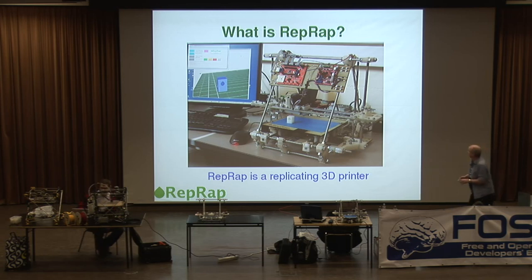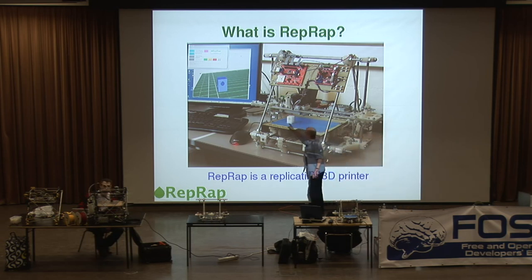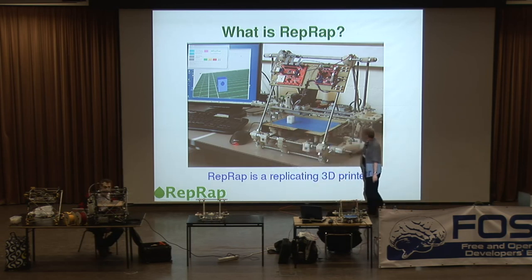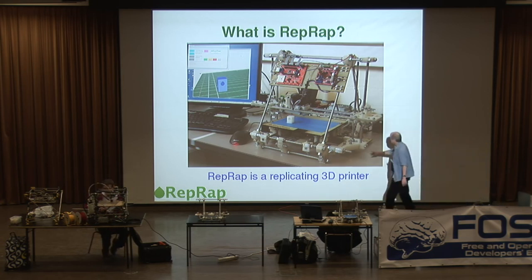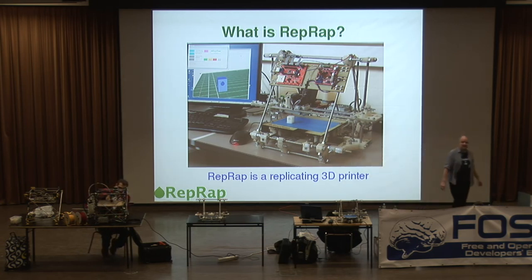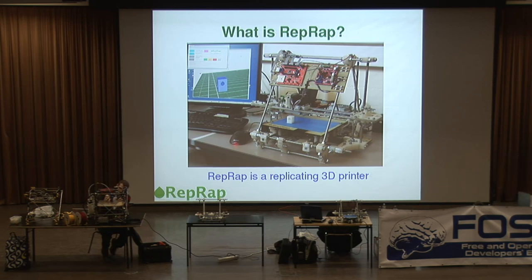This little part here is the part on the screen over there, and that part of the machine is actually this bit of the machine down here. Everything you can see on that picture that's this silvery-white color was printed in a machine like that one, in order to make that one. So it copies itself, in part.